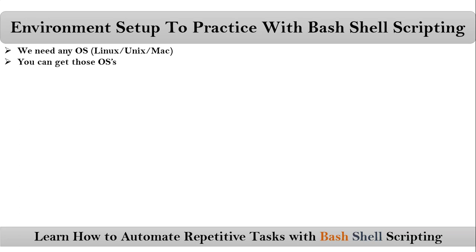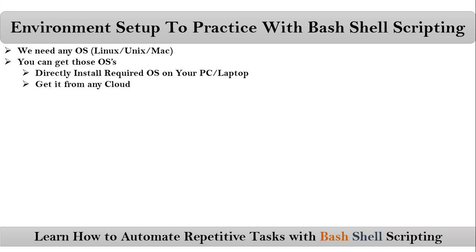There are different ways to get any one of these operating systems. One way is to directly install your required operating system on your PC or laptop. The second and best way is to get it from any cloud. The third way is, if you are on Windows, using WSL — Windows Subsystem for Linux — you can get your required operating system.